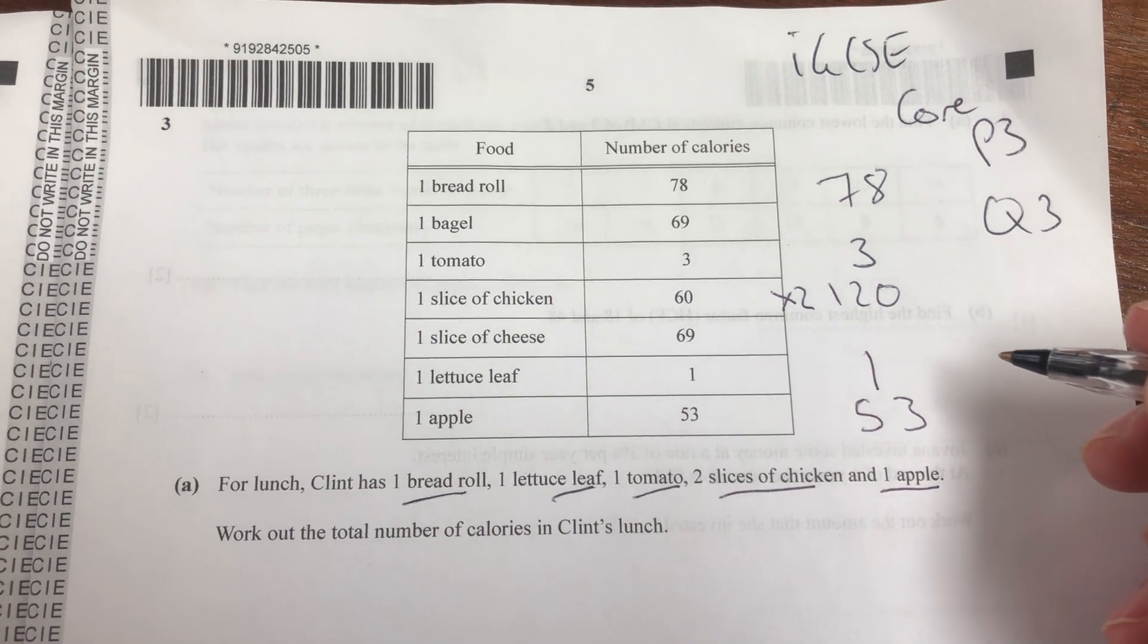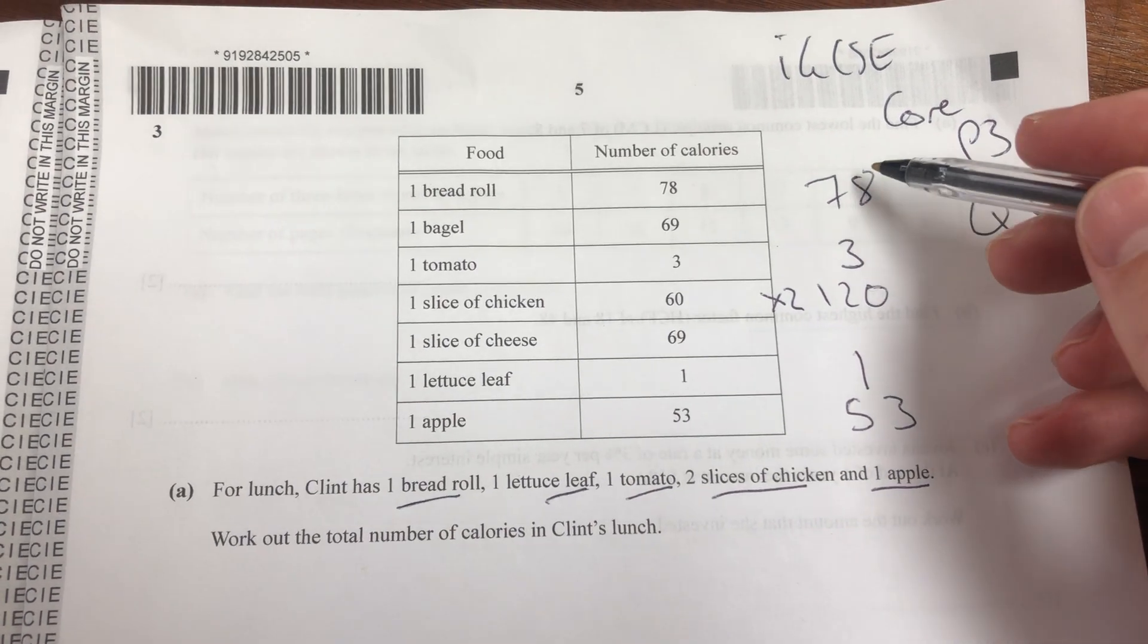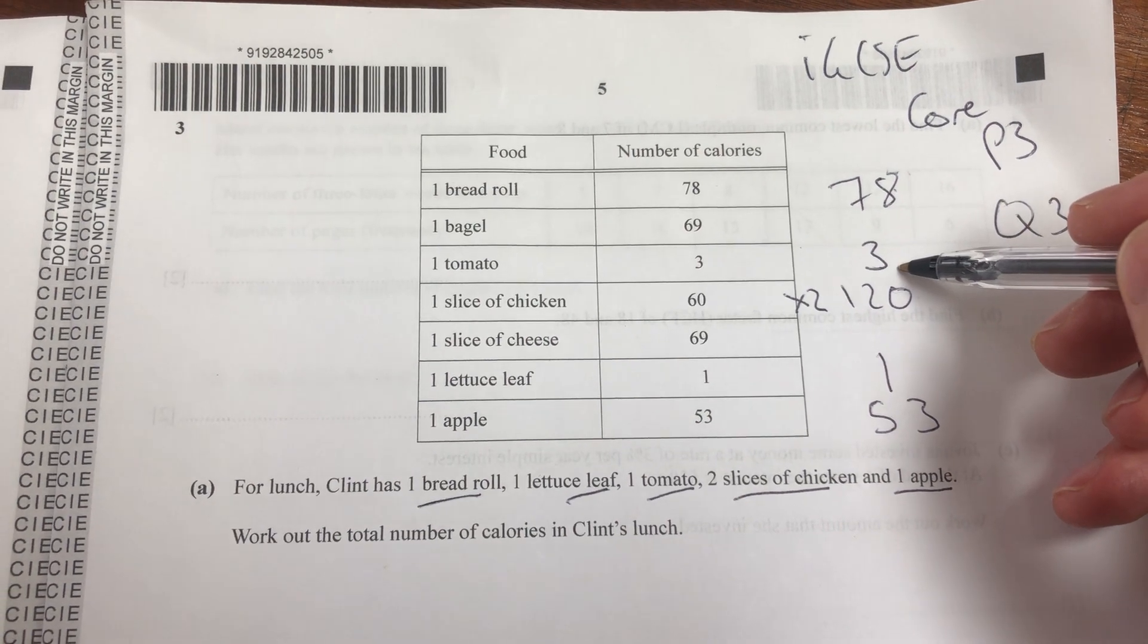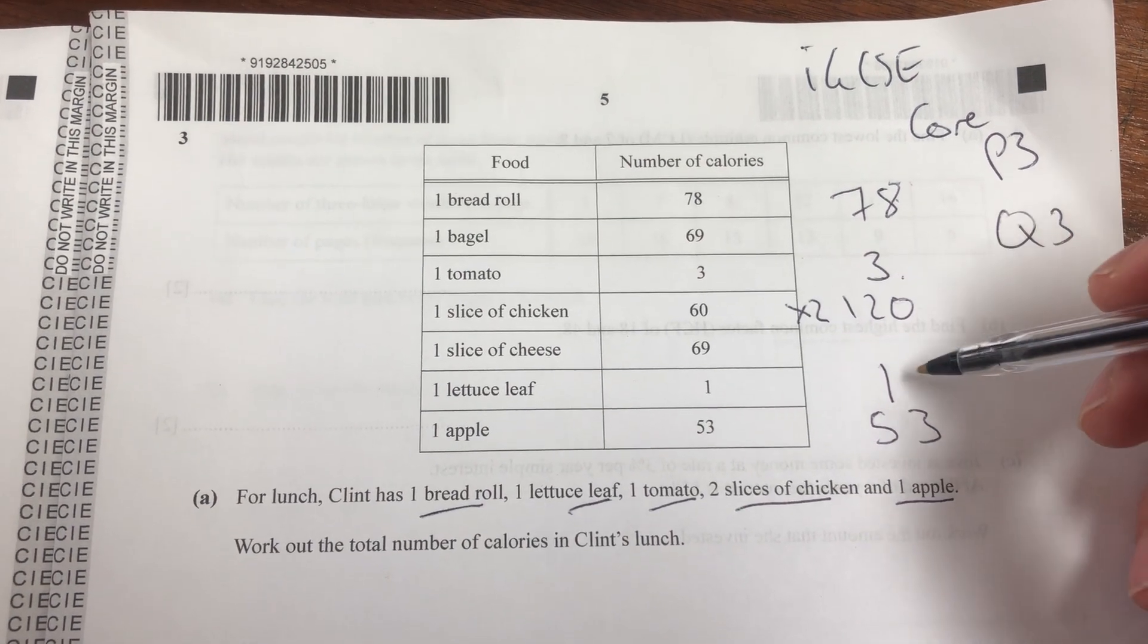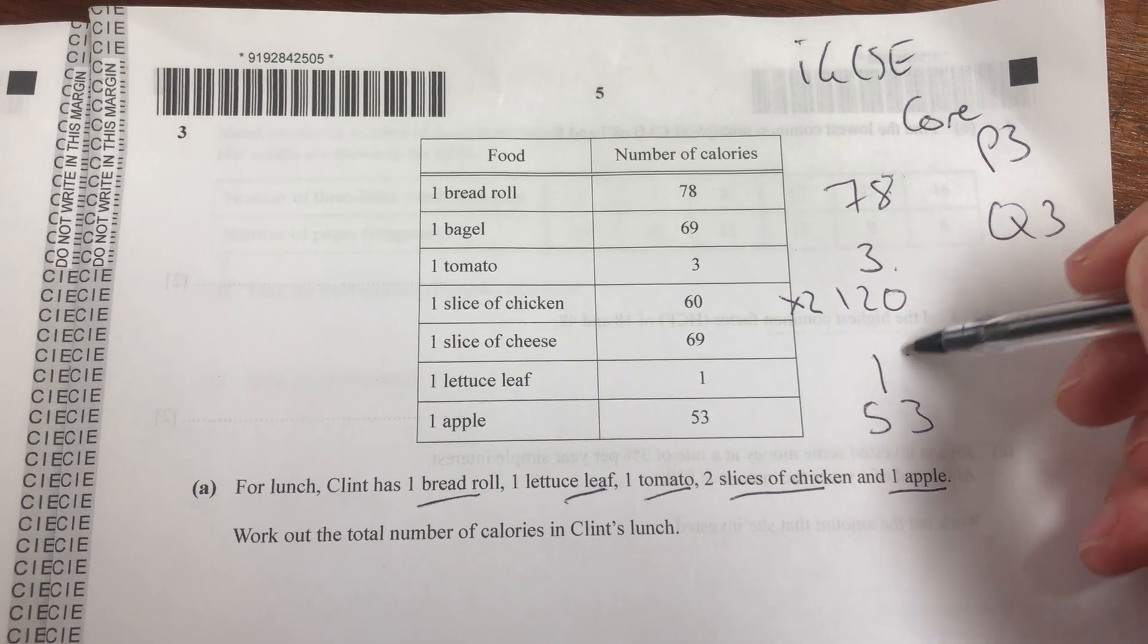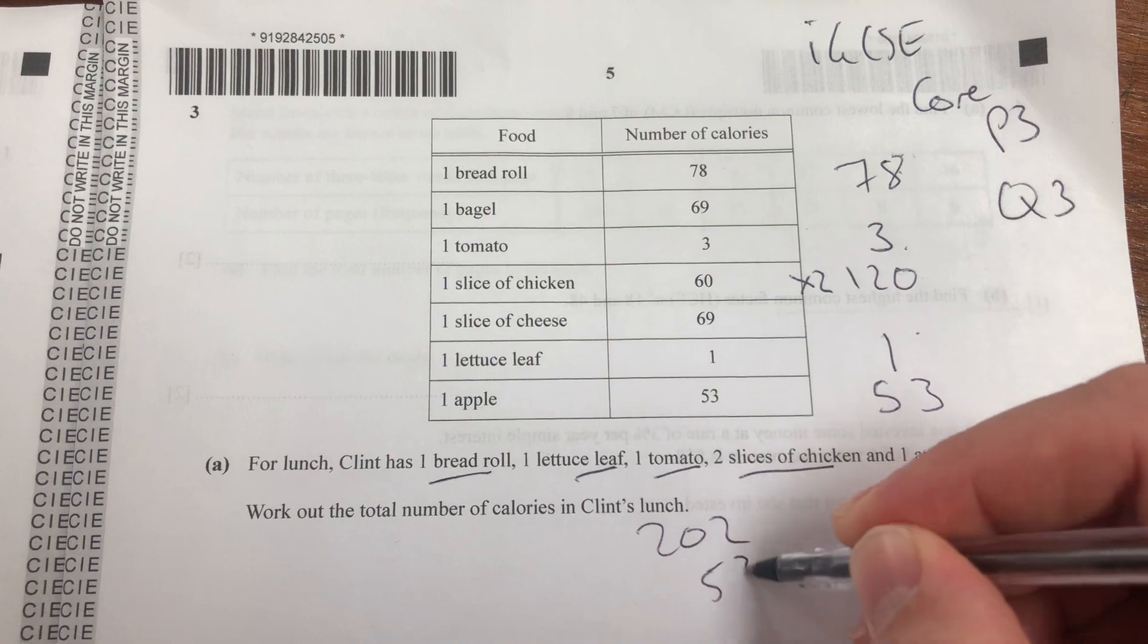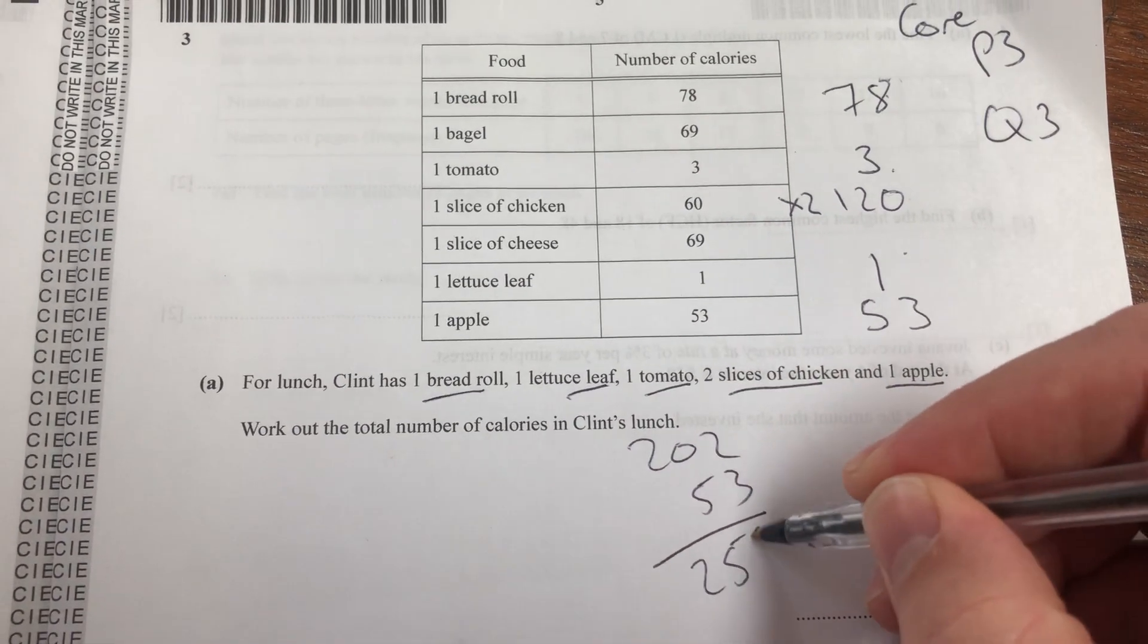We're going to work out the total number of calories there. So if I just add the smaller numbers, 78 and 3, so 78 and 3 is 81, 82, add 120 to that, it's gonna be 202, plus that 53, so I get 255.